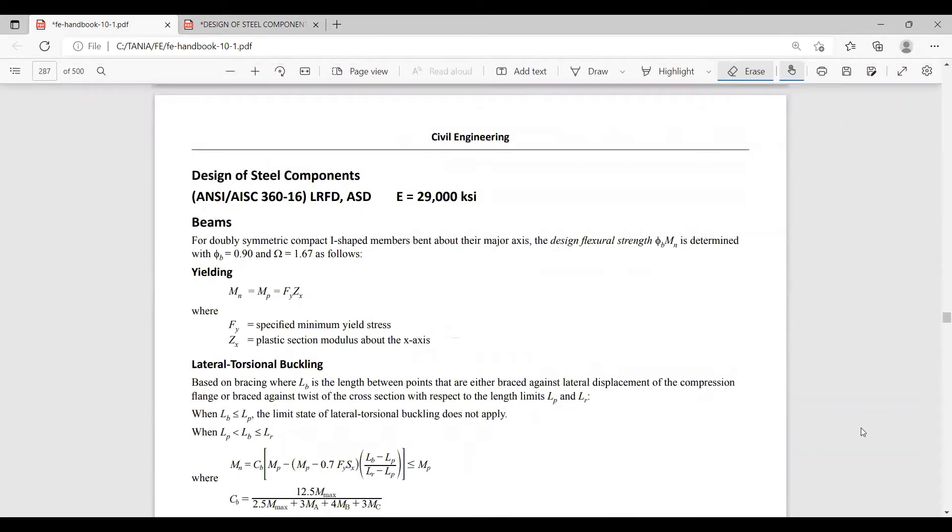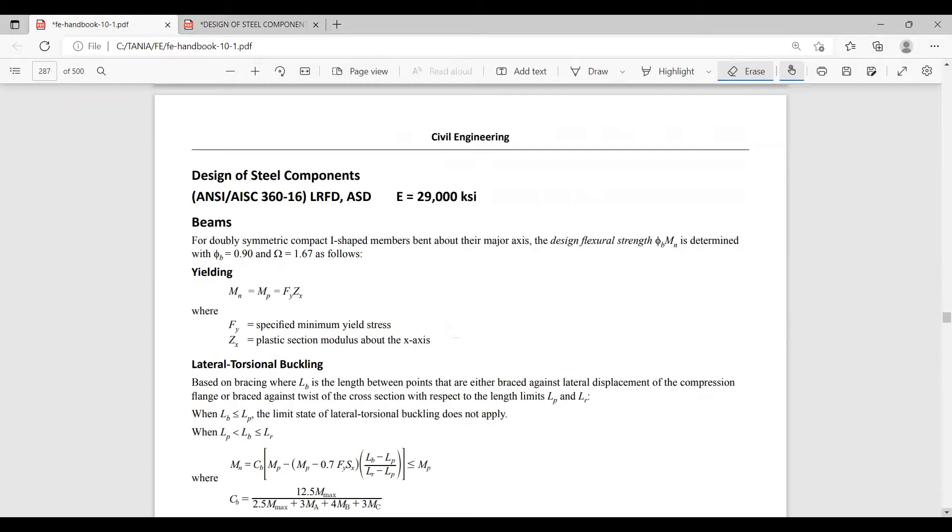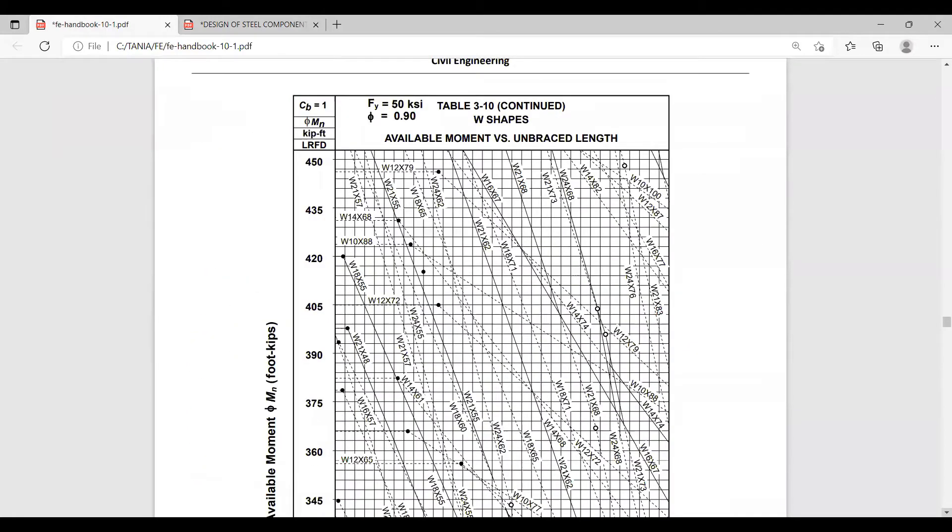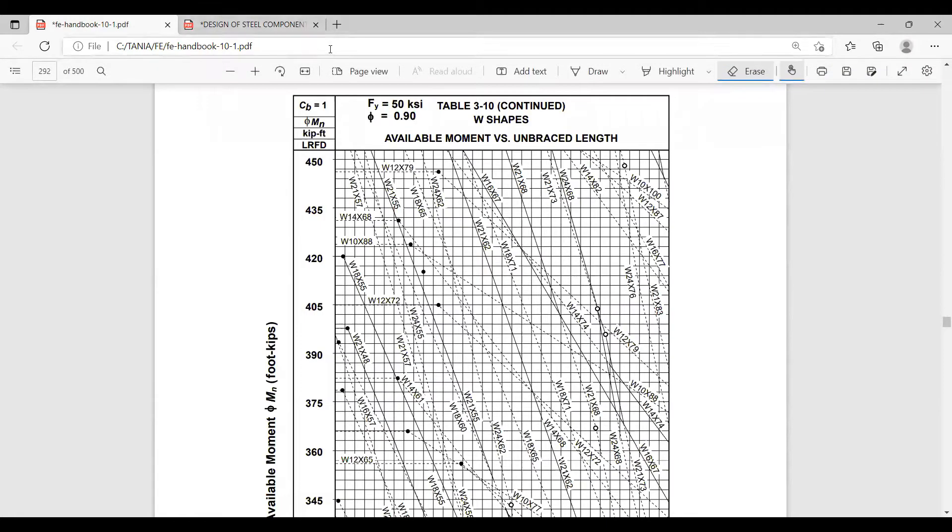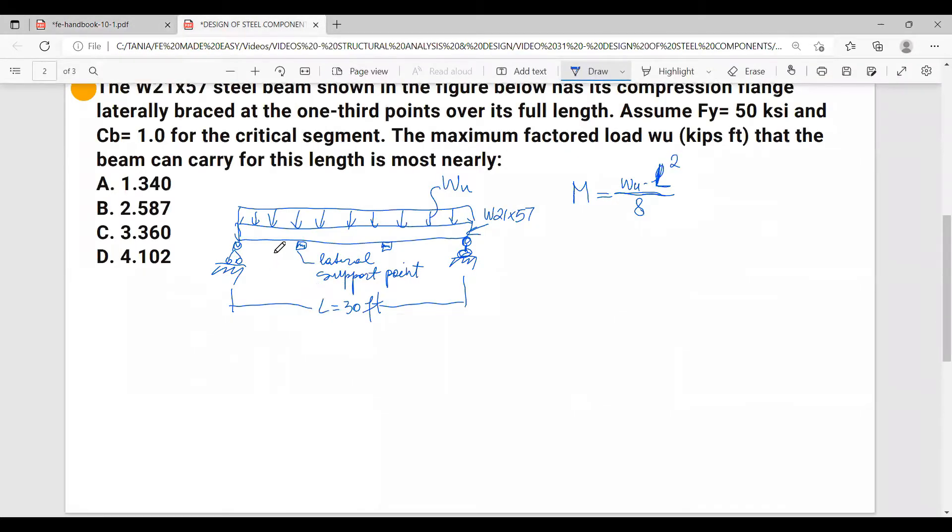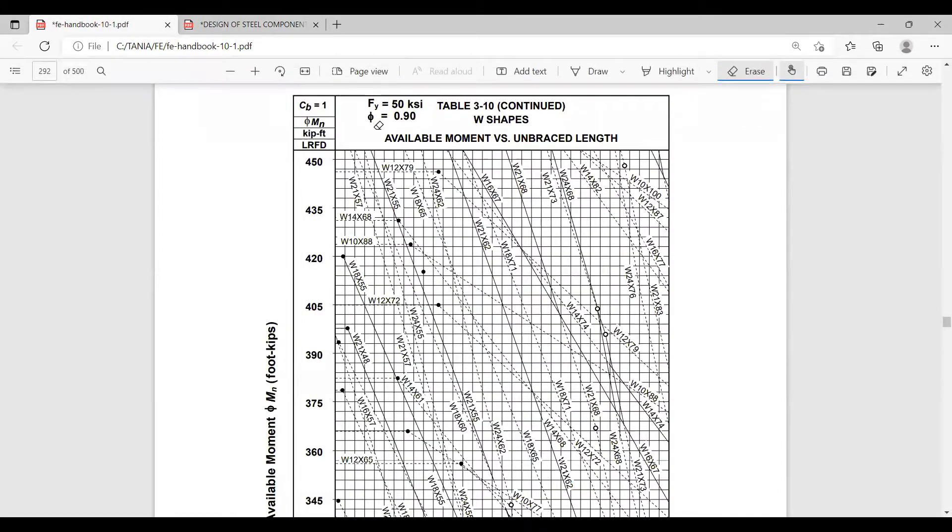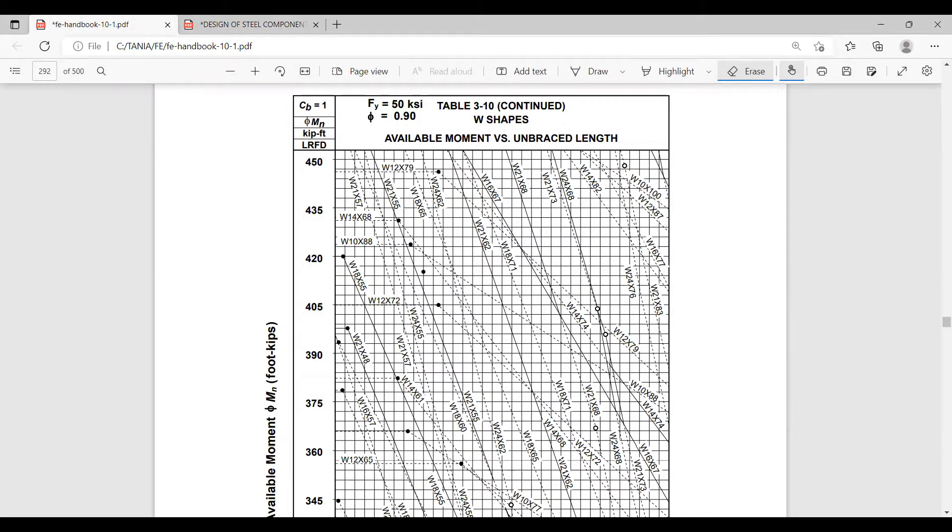And we're gonna go downward. There you go, this is the table named Available Moment vs. Unbraced Length. So we have the unbraced length of the beam which is 10 feet, right, because the total length of the beam is 30 feet and we have support at every one-third, so the unbraced length is 10 feet.